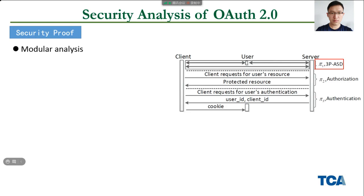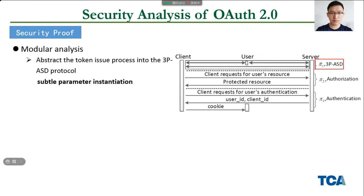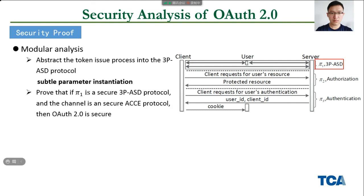Then we conduct a modular security analysis for OAuth 2.0. First, we abstract the token issue process into the 3PSD protocol with state-to-parameter insertion, namely the PI1 part in the figure. Then we prove that if PI1 is a secure 3PSD protocol and the channel is a secure HSE protocol, then OAuth is secure. At last, we prove that the PI1 subprotocol of the two main modes of OAuth 2.0 is 3PSD secure, which concludes the proof.